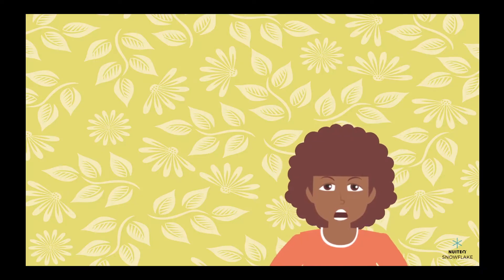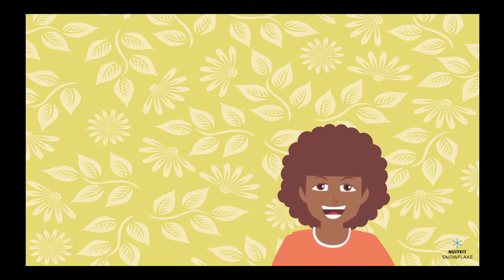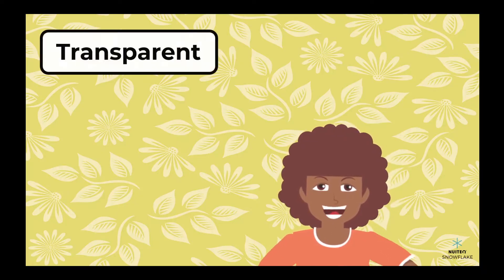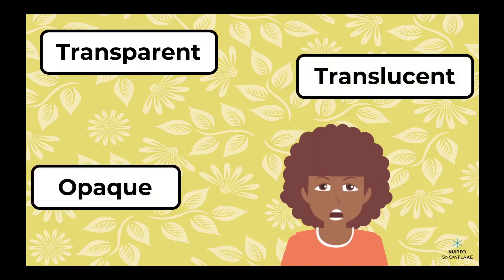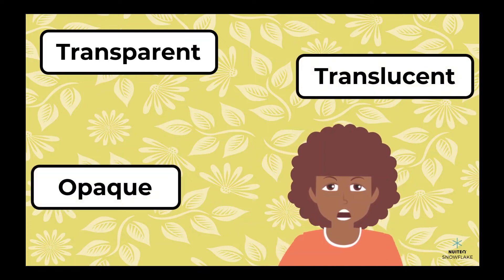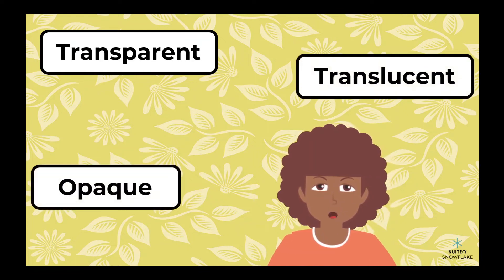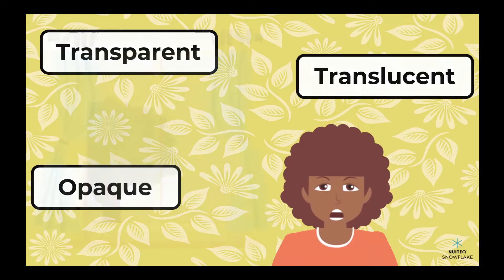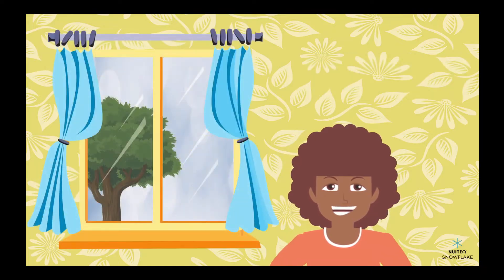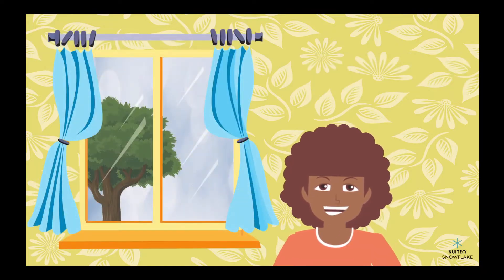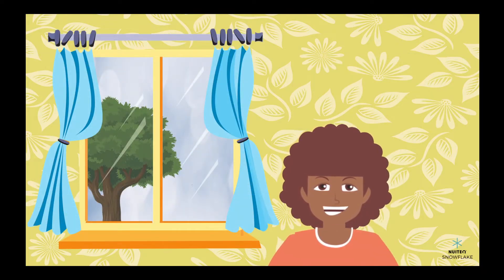So, that's the difference between transparent, translucent, and opaque materials. Each type of material interacts with light in a unique way, and this can have a big impact on the way we see and perceive the world around us.